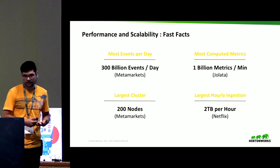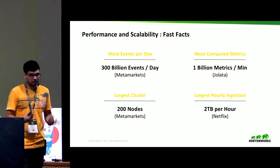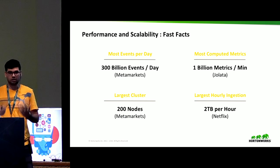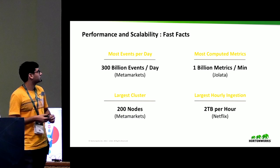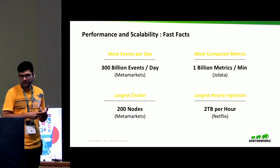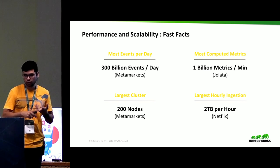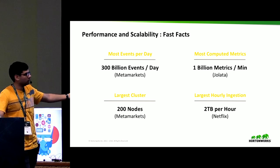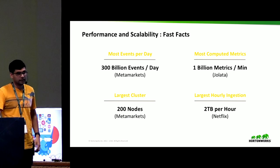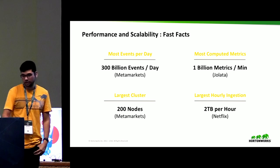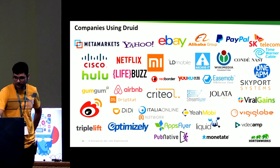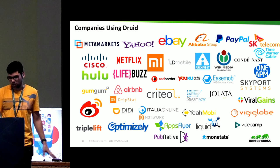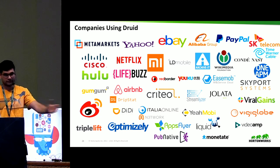Some quick facts about Druid's performance and scalability in production. The largest user is MetaMarkets, the company which initially started Druid, which ingests around 300 billion events per day. Jolata uses Druid for computing around 1 billion metrics per minute. The largest cluster at MetaMarkets is around a 200-node cluster. The largest hourly ingestion rate in terms of data size is reported by Netflix, at around 2 TB per hour. Here is a list of companies using Druid in production at various scales.